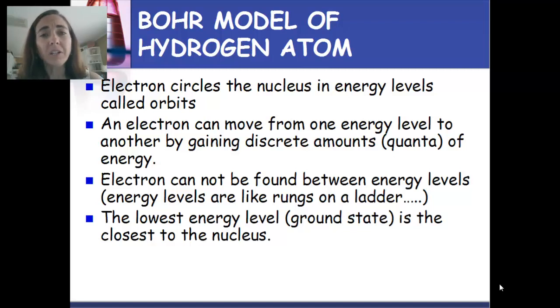Now an electron can move from one energy level to another one if it gains or loses a specific amount of energy, and that's called a quantum of energy. Now electrons can be found in these different orbits, but they can't be found in between them. So it's almost like when you're climbing the rungs of a ladder. You can be on one rung or on the one above it or below it, but you can't exist between the rungs of the ladder.